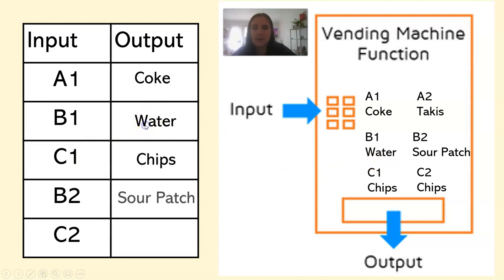And if I type in B2, the output is some candy. And if I type in C2, I'm also going to get chips. So I have two slots that have chips. It's kind of like if you looked at a big vending machine, there would be two bags of chips next to each other.